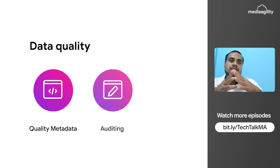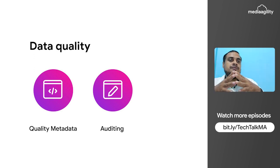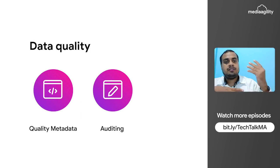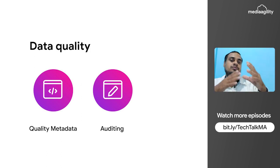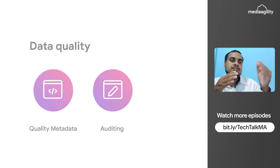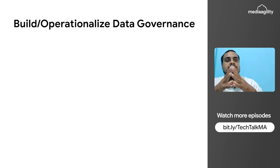Auditing also comes under data quality management. Based on that you can understand which systems are accessing the data. In cloud monitoring, we can also create alerts based on logs to mitigate risk. The next step is building and operationalizing a data governance framework.